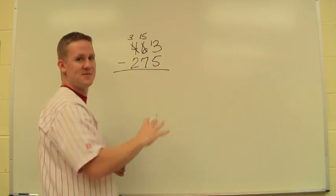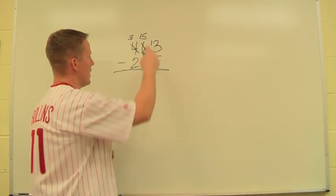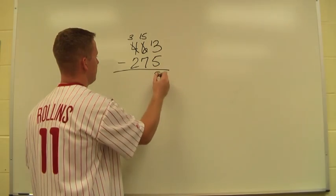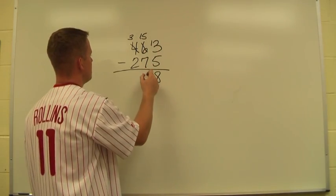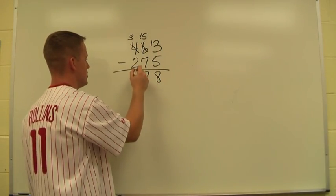So now I can do all of my subtraction now. My trades are all out of the way. So 13 minus 5 is 8, 15 minus 7 is 8, 3 minus 2 is 1.